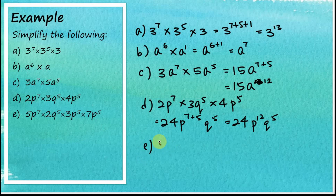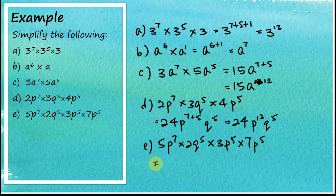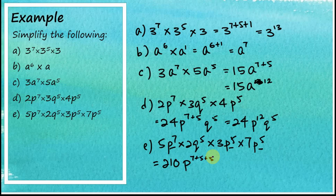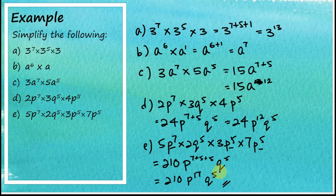For (e): 5p to the power of 7 times 2q to the power of 5 times 3p to the power of 5 times 7p to the power of 5. Multiply the coefficients: 5 times 2 equals 10, and 3 times 7 equals 21, and 21 times 10 equals 210. For the p terms: 7 plus 5 plus 5 equals 17, so p to the power of 17. The final answer is 210 times p to the power of 17 times q to the power of 5.